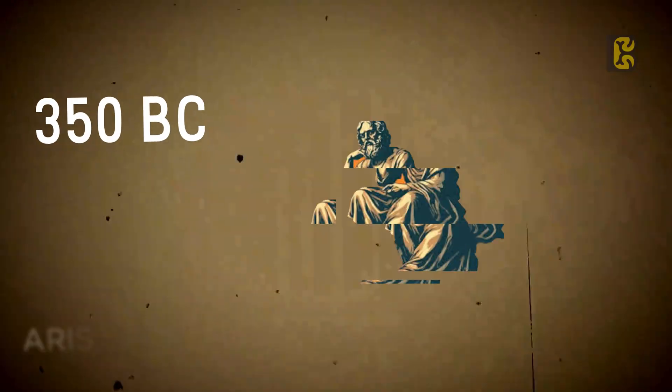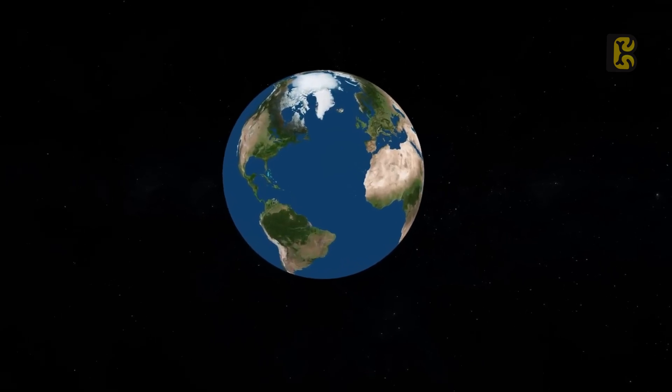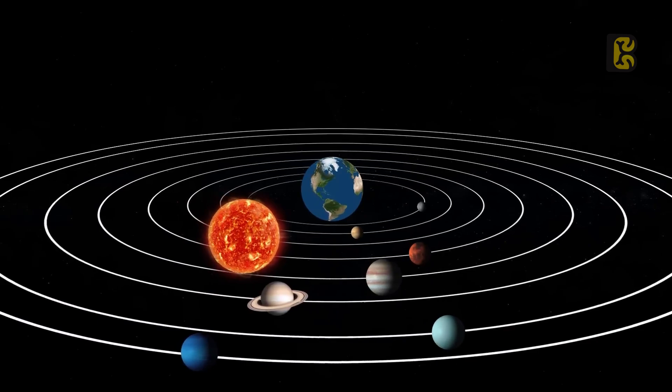In 350 BC, the famous Greek philosopher Aristotle said that our Earth is a stationary object in the solar system and that all the planets, including the Sun, revolve around the Earth.